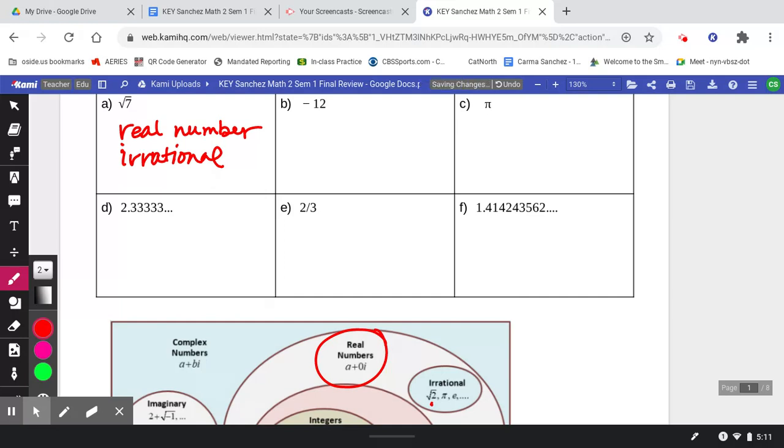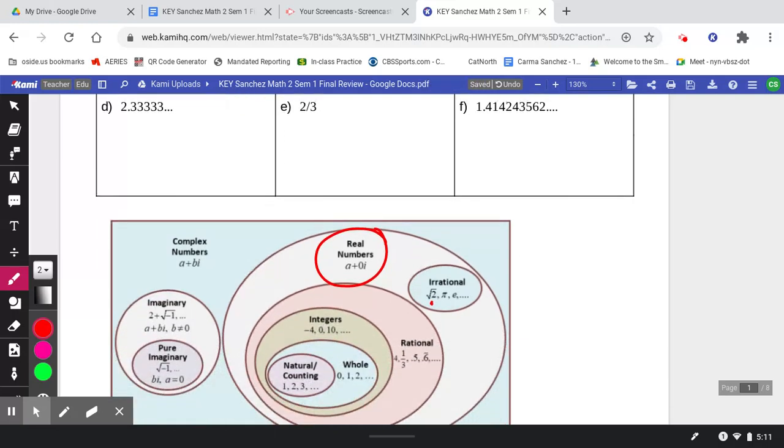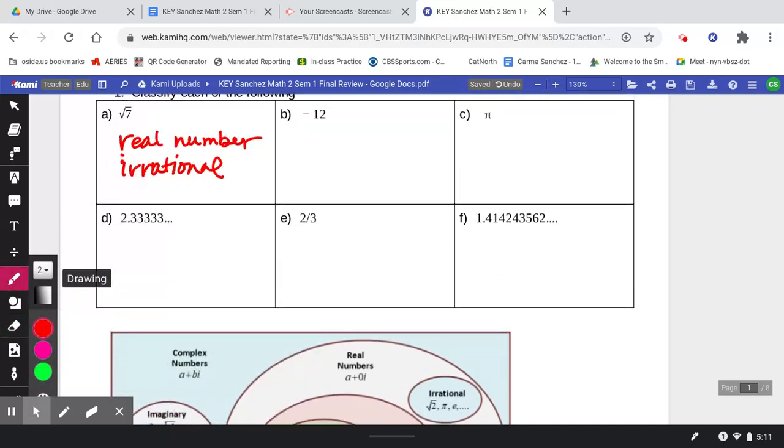Okay, now, is there anything else we could call it? I guess technically it's all within the complex number system as well. So you could call it a complex number as well. Square roots are irrational - that's the most common, most specific definition that we're looking for.